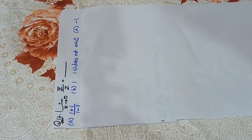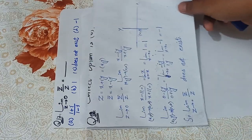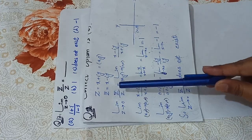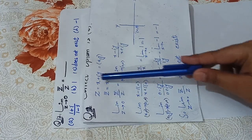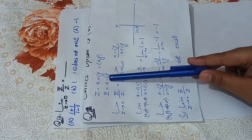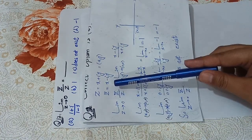Question 12: evaluate the limit as z approaches 0 of z̄/z. Here z is a complex number equal to x + iy, represented as the ordered pair (x, y).